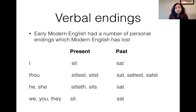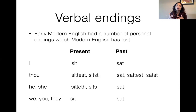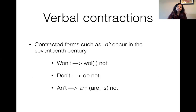Many personal endings have been lost in Modern English. In the present: 'I sit, thou sitest, he siteth, we sit'; in the past: 'I sat, thou sat, he sat, we sat'. In the past the forms look much more like how we speak today, while the present still retained endings like '-est' and '-eth', which changed when 'thou' gave way to 'you' in the Late Modern English era. Several verbal contractions appeared around the 17th century: 'won't' (will not), 'don't' (do not), and 'ain't' (am not).